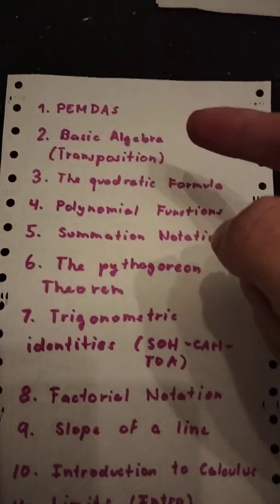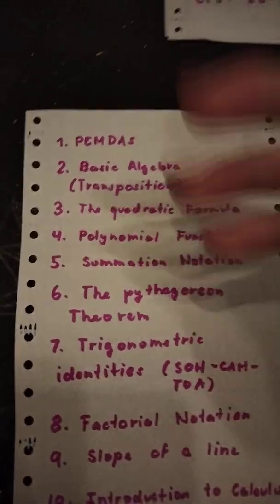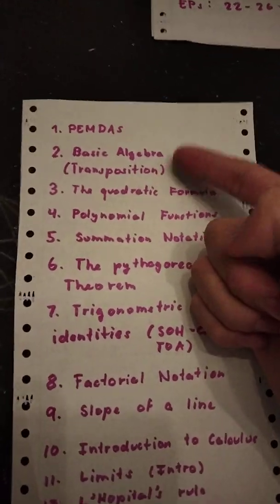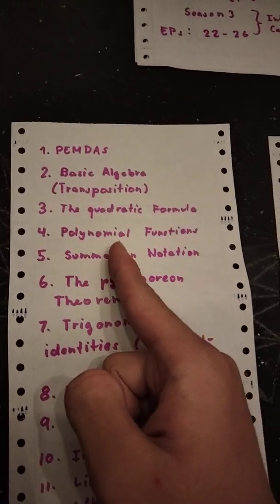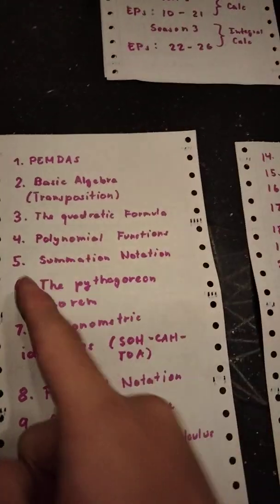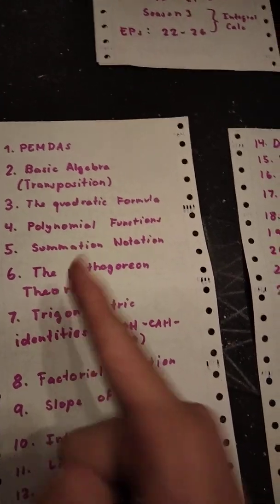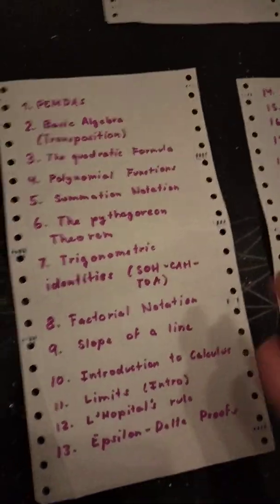For our pre-calculus we have: first one is PEMDAS or order of operations, basic algebra which involves transposition of various variables, then we have the quadratic formula, polynomial functions and the transformations, summation notation, the Pythagorean theorem which is a squared plus b squared equals c squared. I'll explain it in depth in that episode.